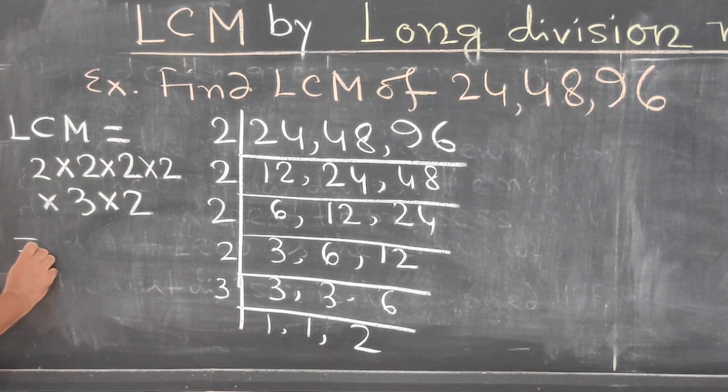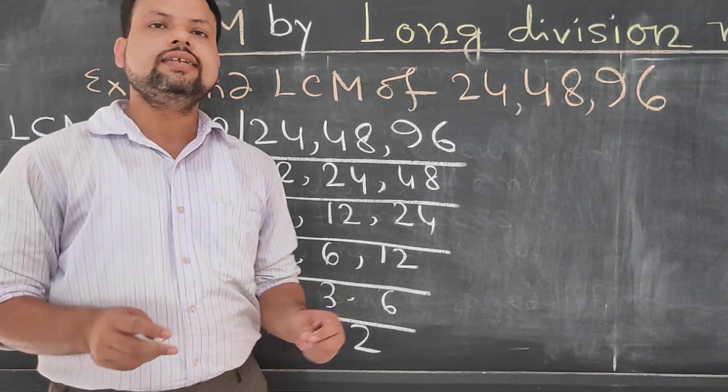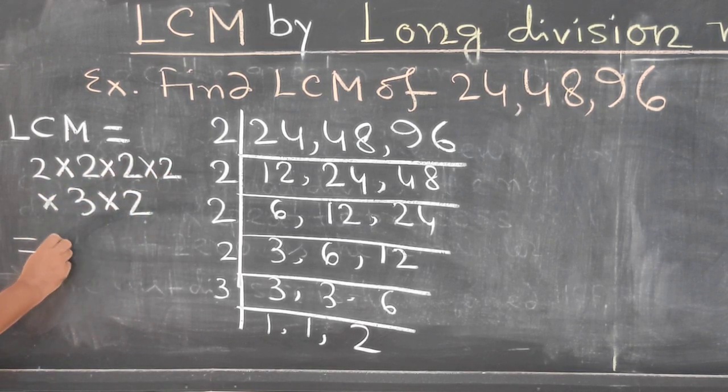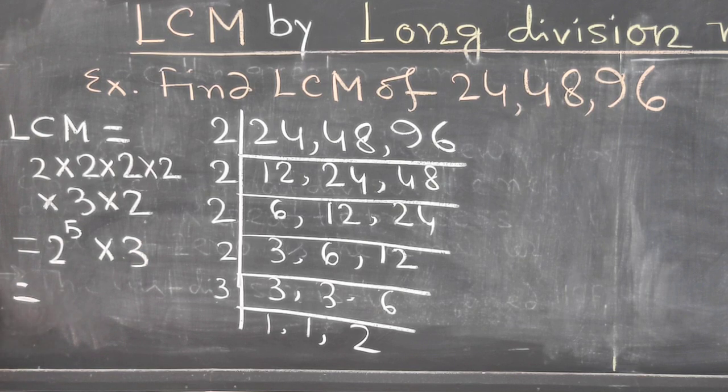Then equals to, I can write in index number also, or in index notation. That means 1, 2, 3, 4, 5 times 2. So 2 to the power 5, into 3, equals to, this one is like 2 to the power 5, that's 2 times 2 is 4, 4 times 2 is 8, 8 times 2 is 16, 16 times 2 is 32, into 3.